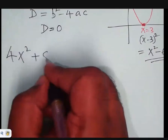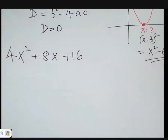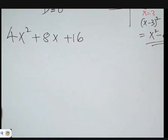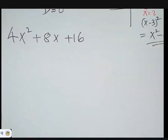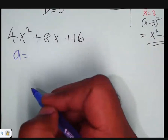4x² + 8x + 16. You want to verify if this is a perfect square trinomial. What is your a in this case? a = 4.